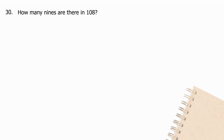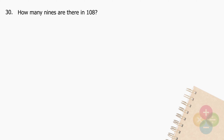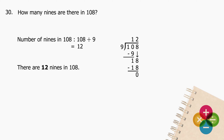Question 30: How many 9's are there in 108? Divide 108 by 9 and the quotient is 12. There are 12 nines in 108.